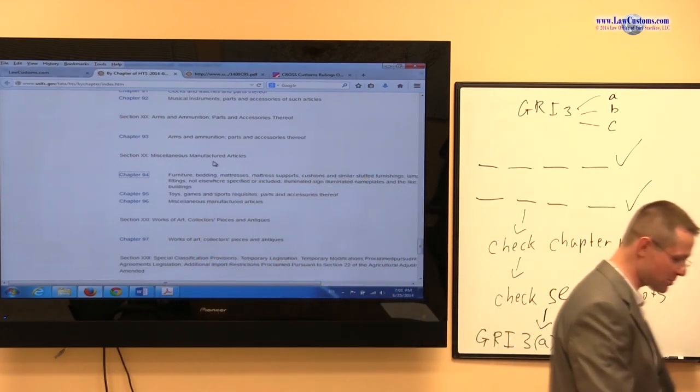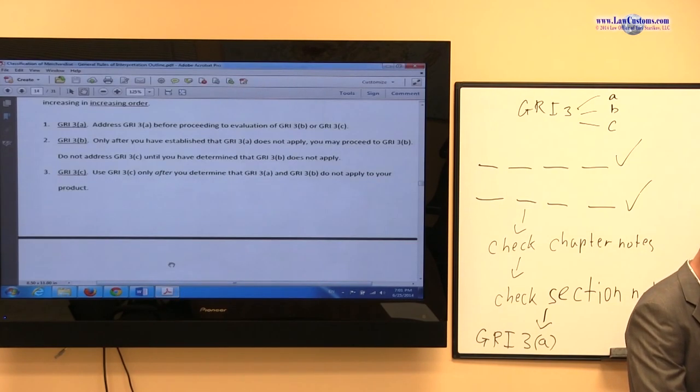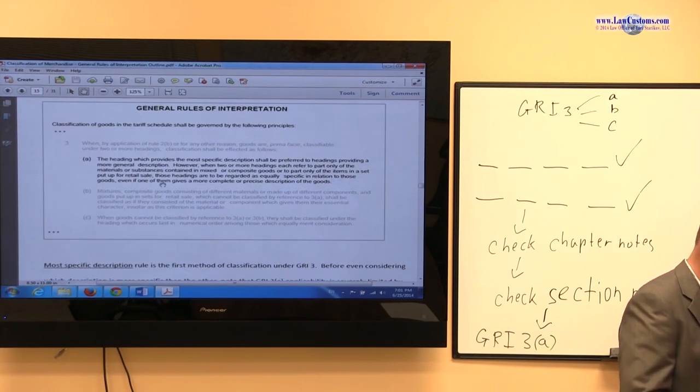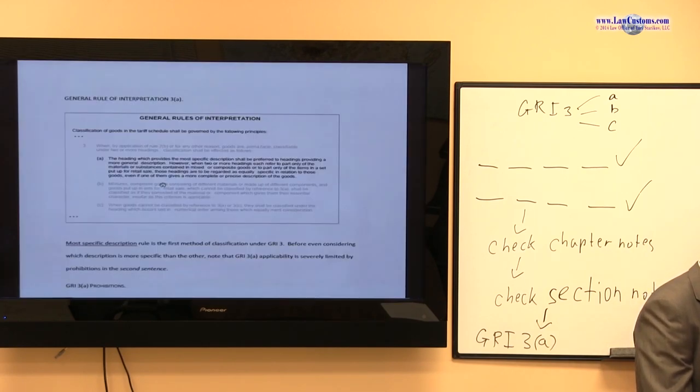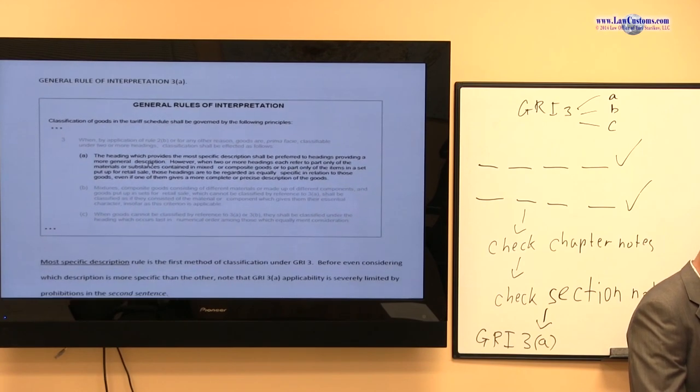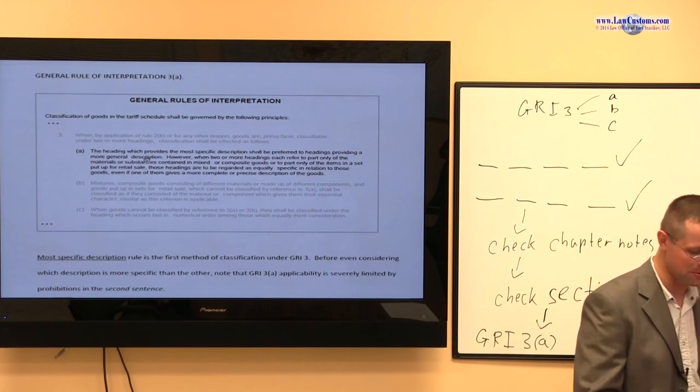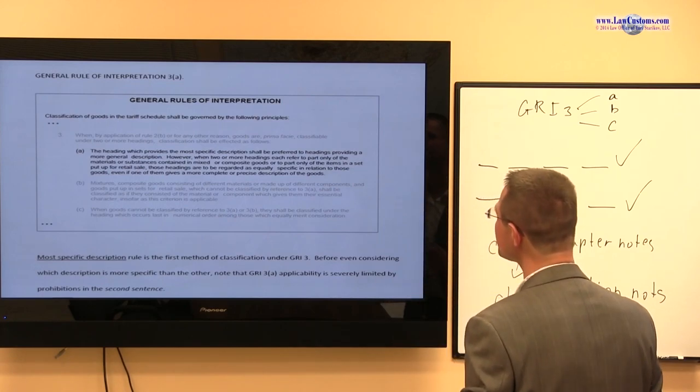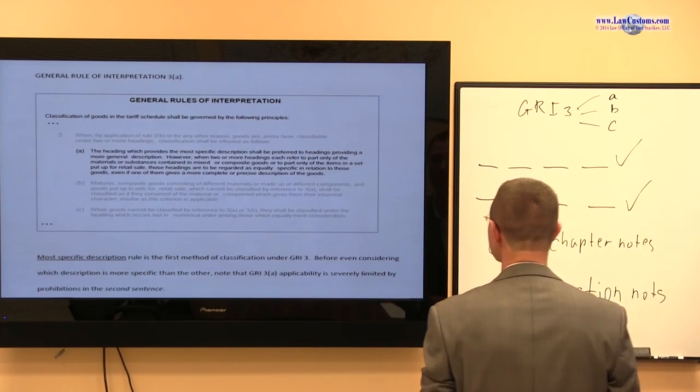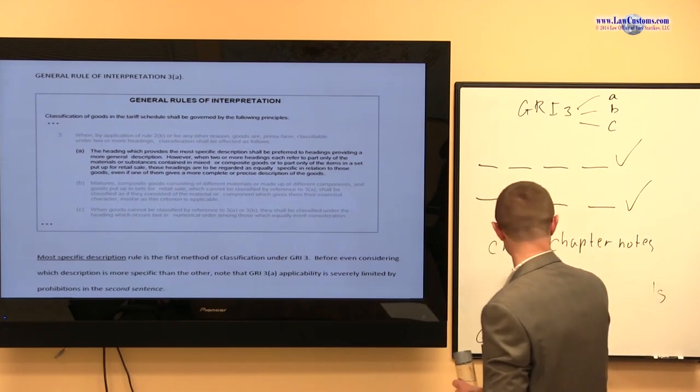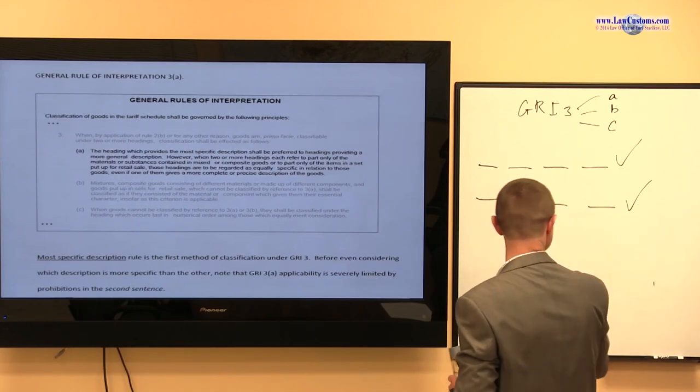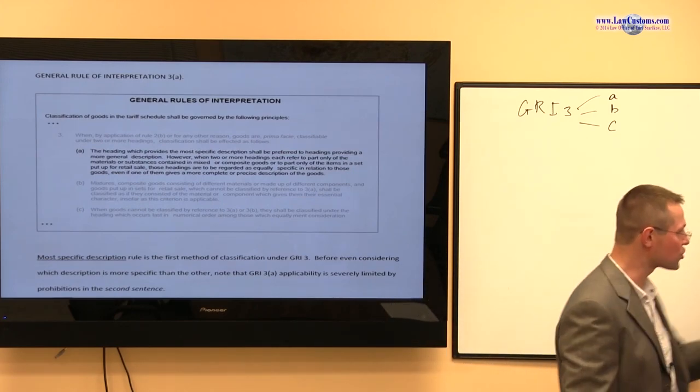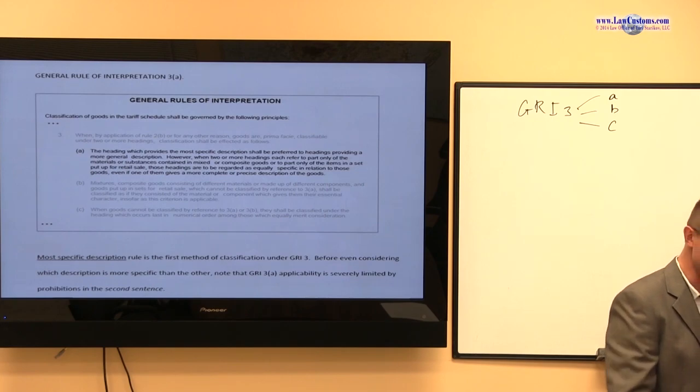And then you have a green light to start your analysis according to the GRI3 subdivisions. So what do we do? We start with subdivision A. So how do we analyze subdivision A? Well, a good starting point would be to read the subdivision in the first place. So let's see what it says. The heading which provides the most specific description shall be preferred to heading providing a more general description. Let's stop right there.